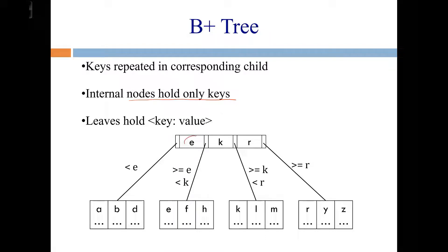Internal nodes hold only keys, so there's no value associated with each key in the internal node. But the leaf nodes have an associated value with the key. So what is that extra data held in the leaf nodes? Well, it depends on which index it is.